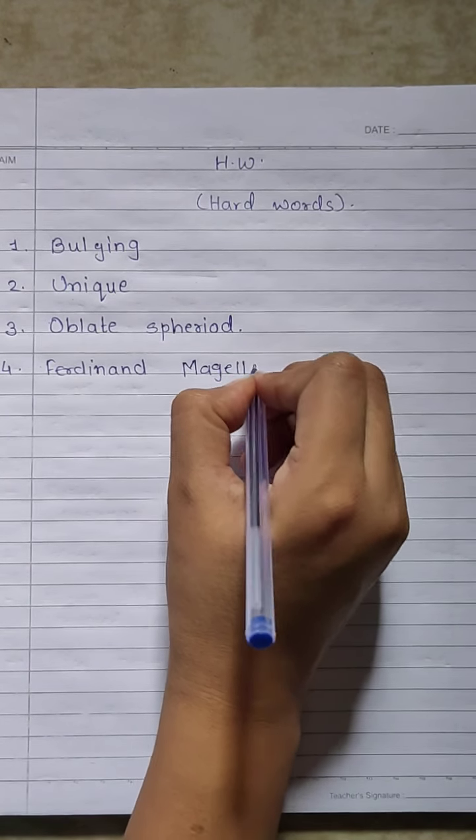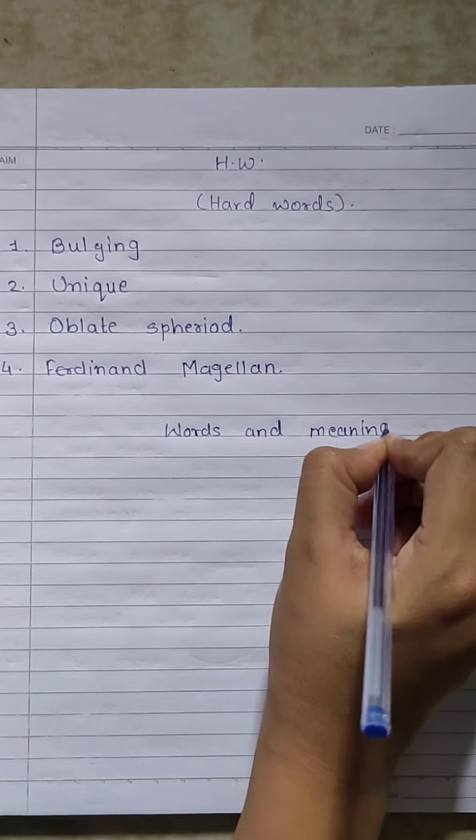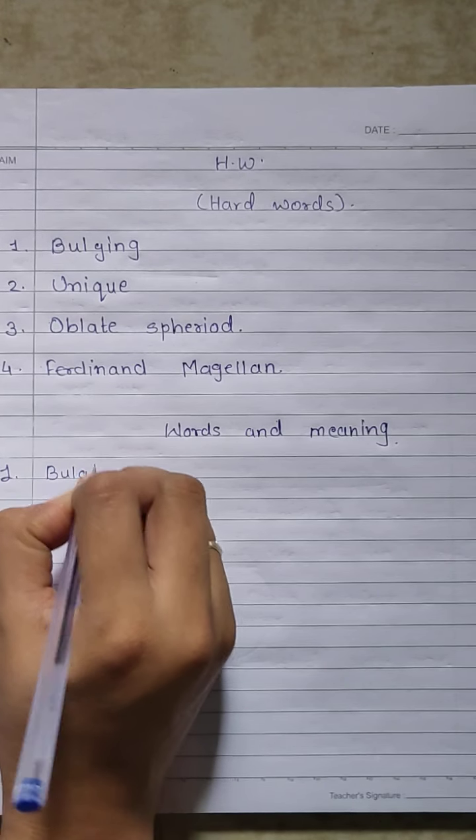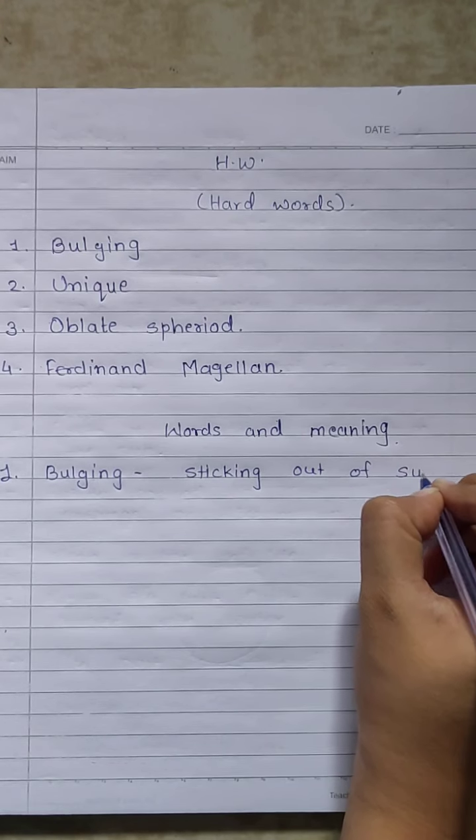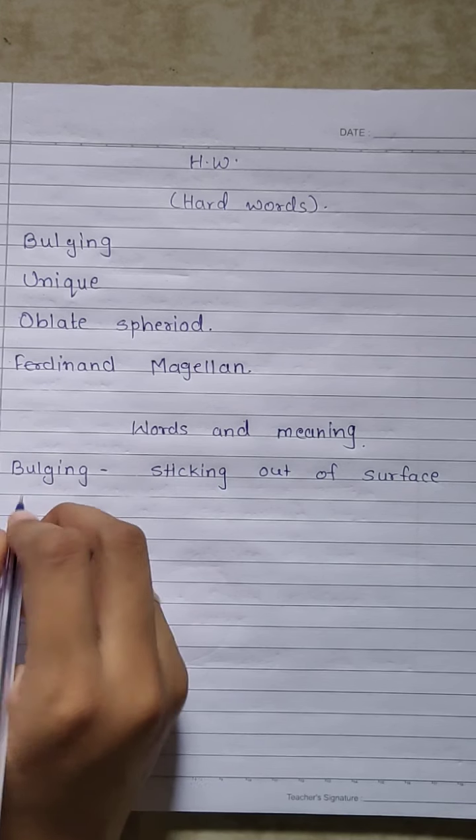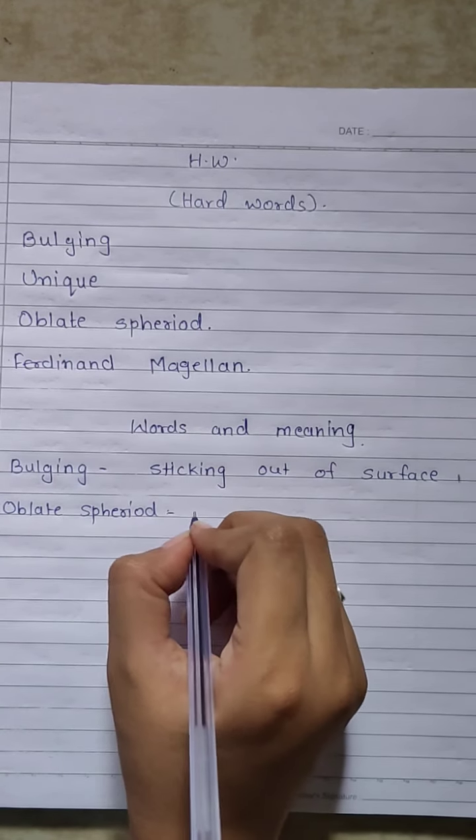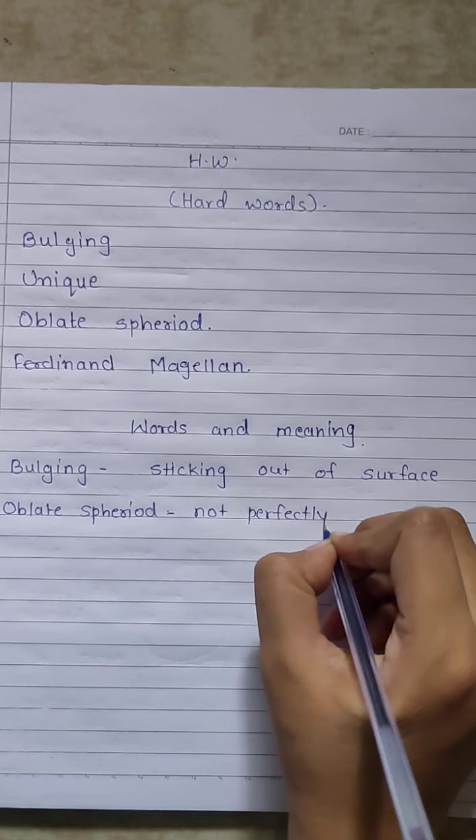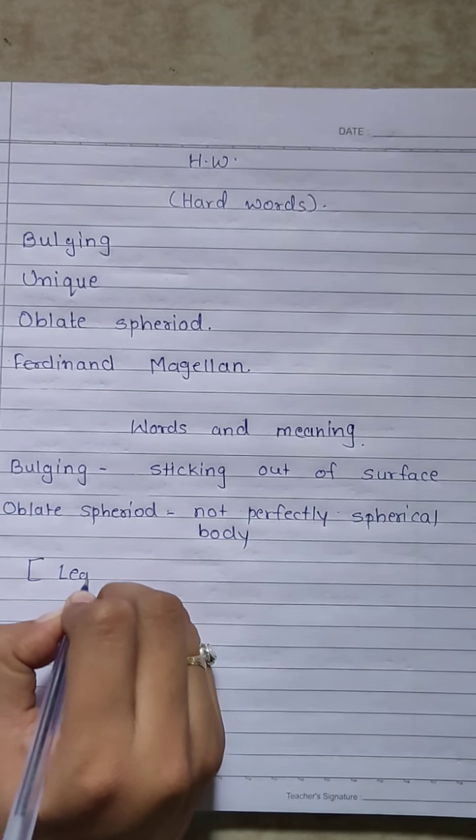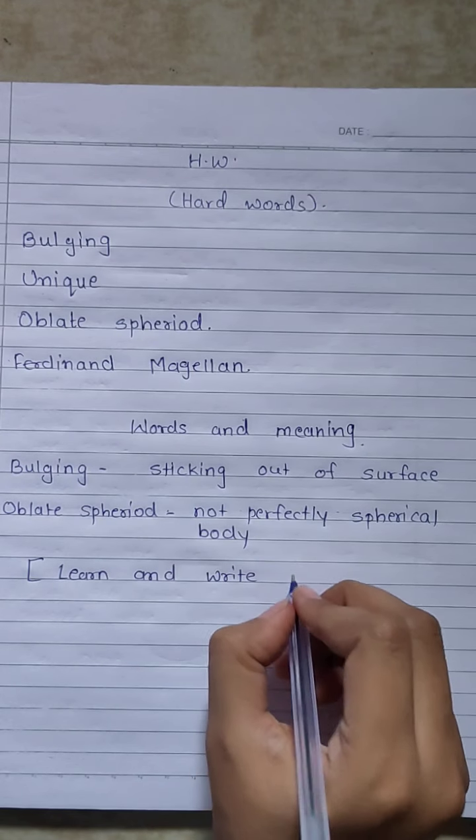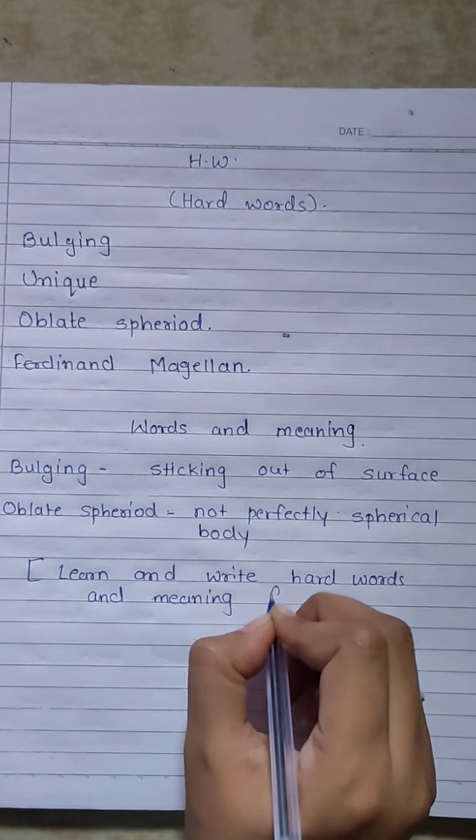Now word and meaning. First is bulging, means sticking out of surface. Next, second one is oblate spheroid, means not perfectly spherical body. Learn and write hard words and meaning for three times.